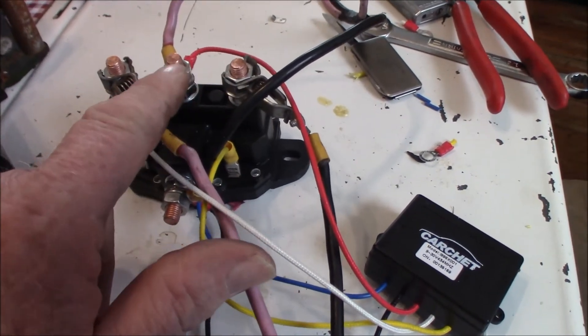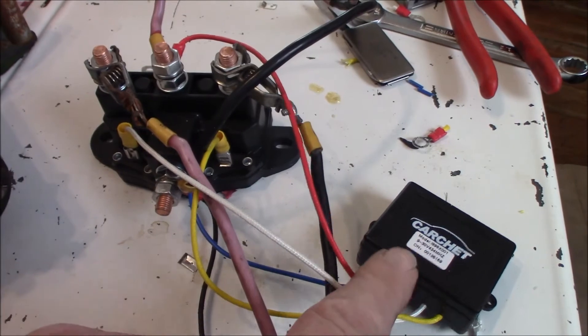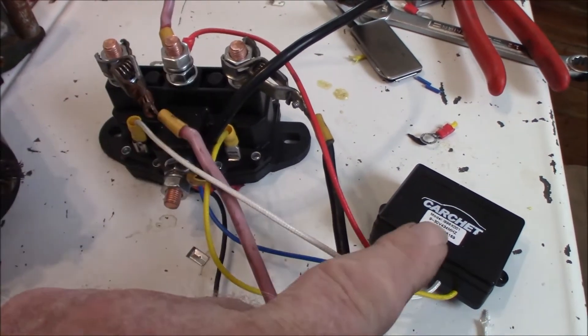Now the hot wire is up here, coming from your battery. Then the little red wire going to your remote thing goes to the same place.